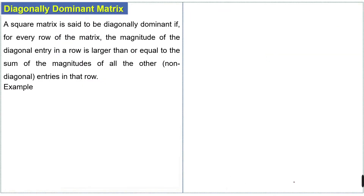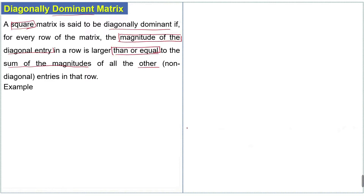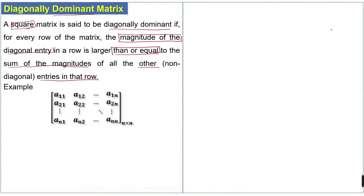A square matrix is said to be diagonally dominant if for every row of the matrix, the magnitude of the diagonal entry in that row is larger than or equal to the sum of the magnitudes of all the other non-diagonal entries in that row. For example, consider an n×n square matrix with rows from the first row to the nth row.